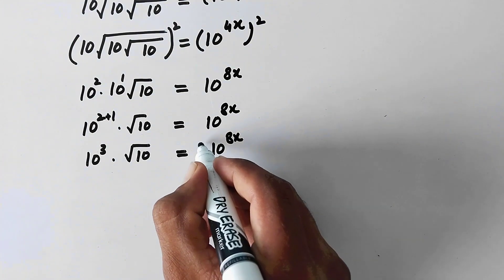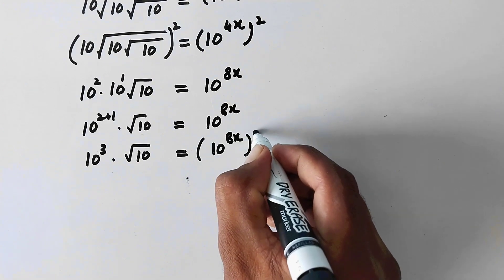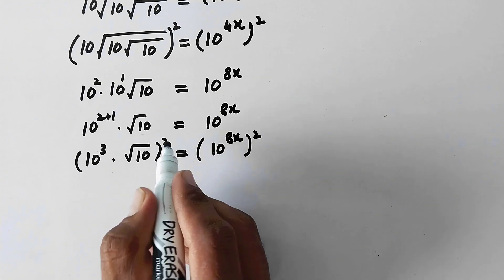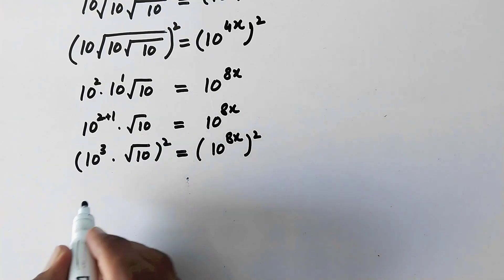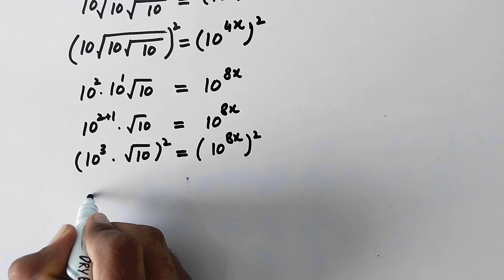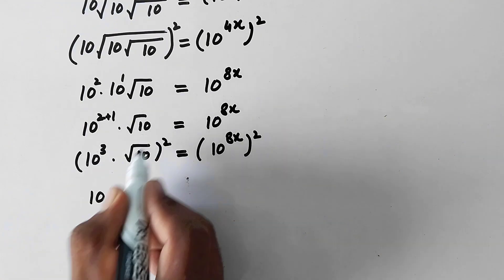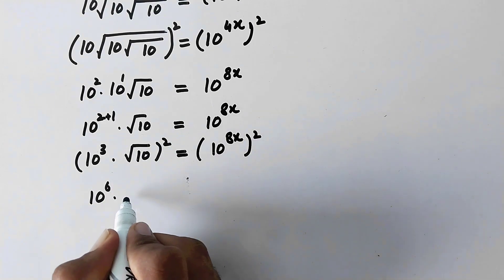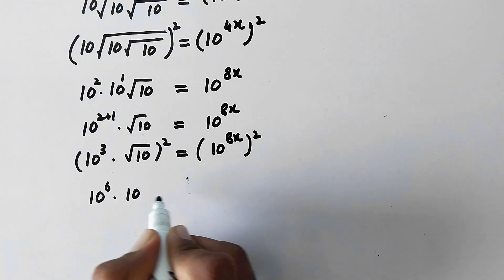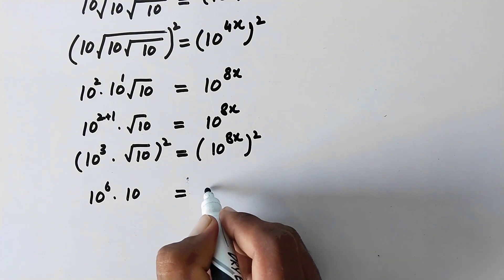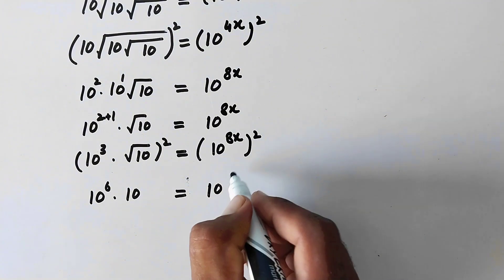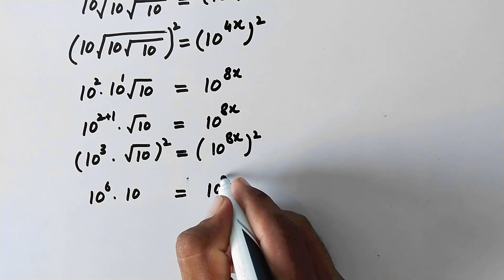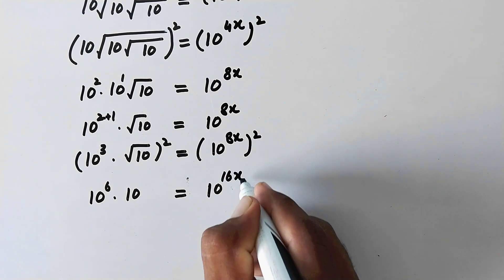Now here again we will take square on both sides of the equation. So here we will take square root 10 raised to power 8 times, and 2x will be 16x.